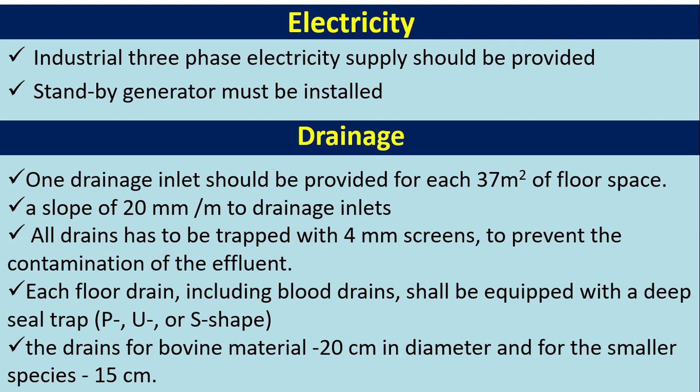For drainage, one drainage inlet should be provided for each 37 square metres of floor space. A slope of 20 mm per metre to drainage inlets is required. All drains must be trapped with 4 mm screens to prevent contamination of effluent. Each floor drain, including blood drains, shall be equipped with a deep seal trap — either P or S shape. Drains for bovine material should be 20 cm in diameter, and for smaller species, 15 cm.